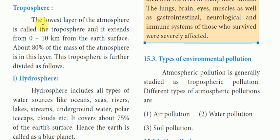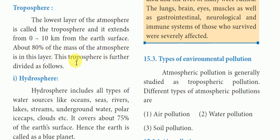The troposphere is the lowest layer of the atmosphere. It extends from 0 to 10 km from the Earth's surface. About 80% of the mass of the atmosphere is concentrated in this layer.